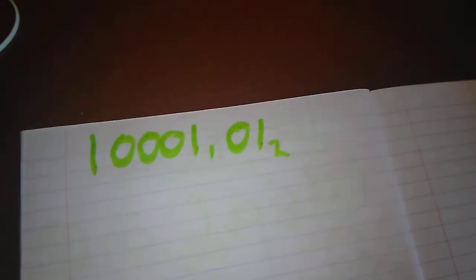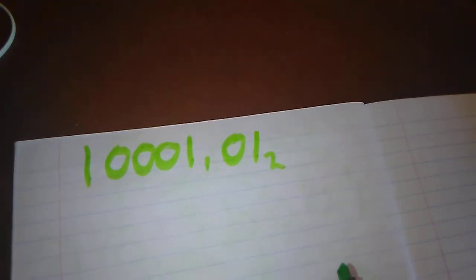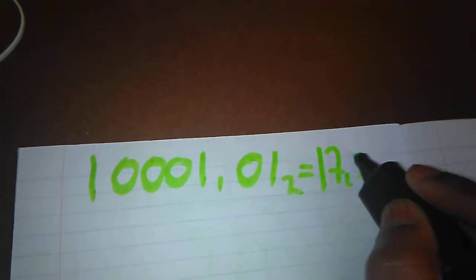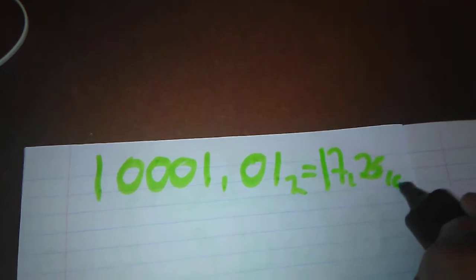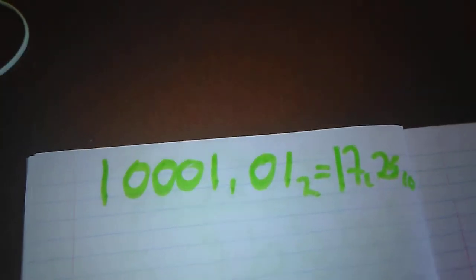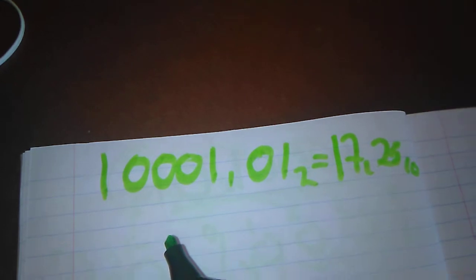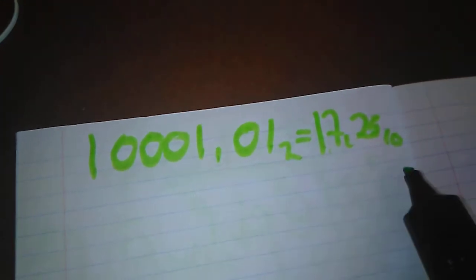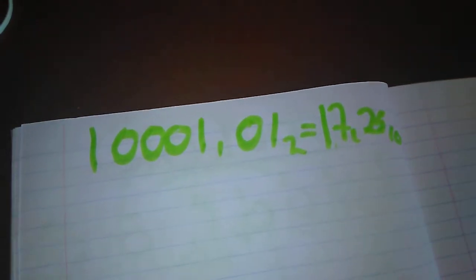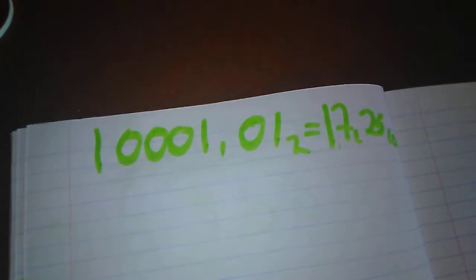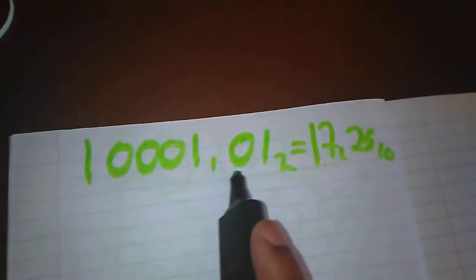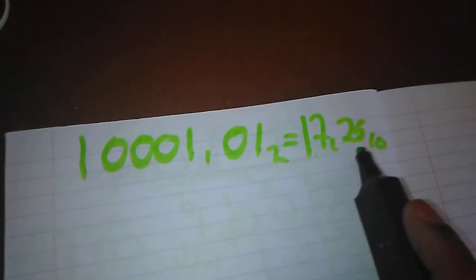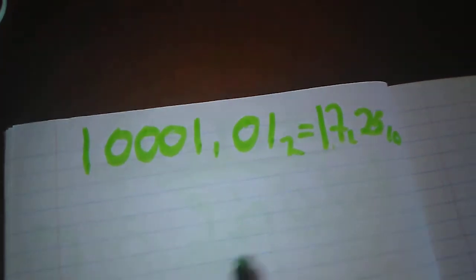Hello guys, welcome back. As we did in our last tutorial, tutorial number three, we were converting a decimal number which has a comma back to binary, and our answer was 1001.01. The decimal number we were converting is 17.25. If you have not seen that tutorial, refer back to tutorial number three. Today I'm going to take the answer we got from our last tutorial and convert it back to prove that our answer was correct.